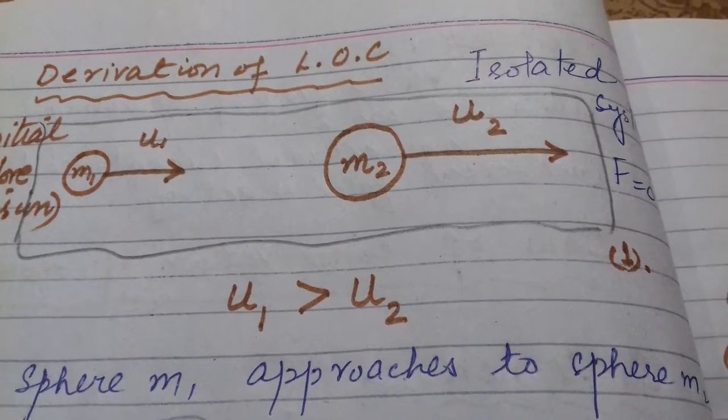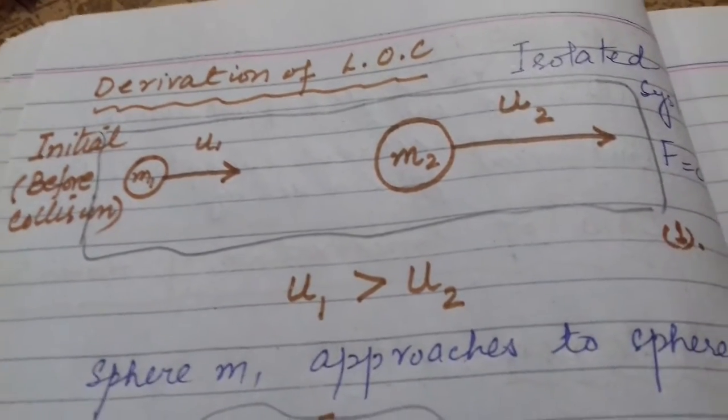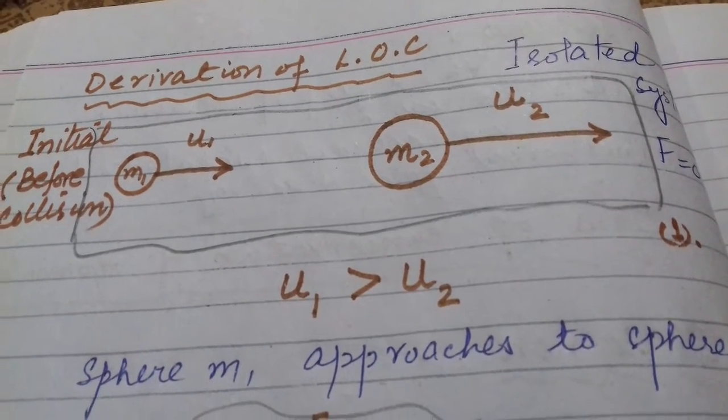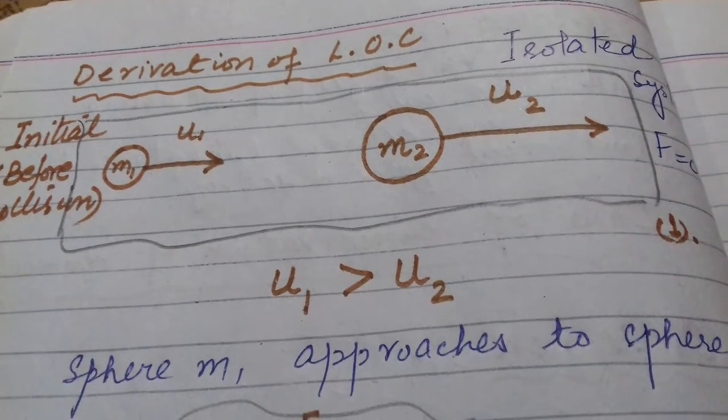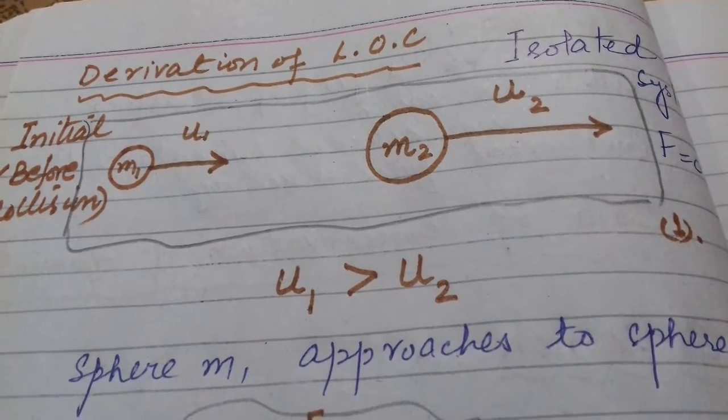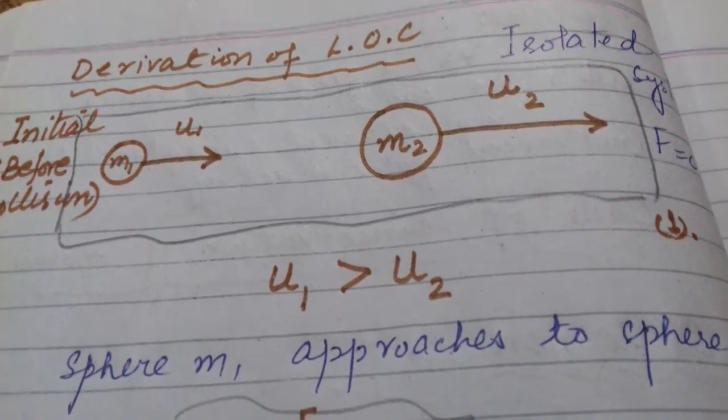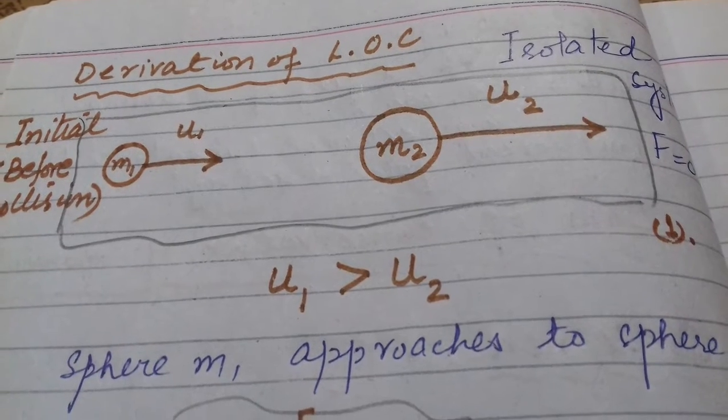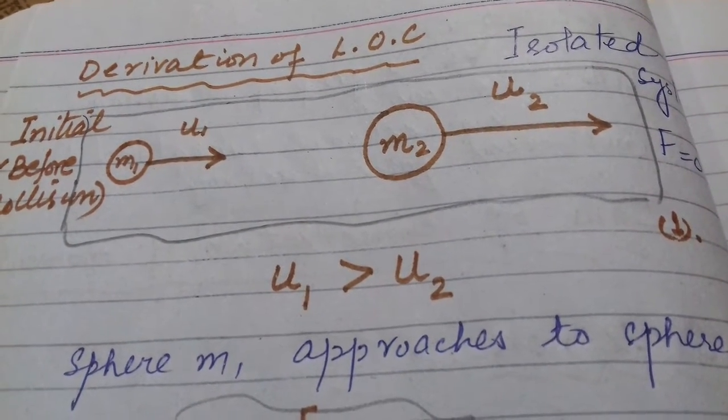So U1 is greater than U2. This is the initial condition. We have two spheres, mass M1 and M2. M1 is moving on a straight path with initial speed U1, and M2 is also moving with speed U2. The difference is that U1 speed is greater than U2.